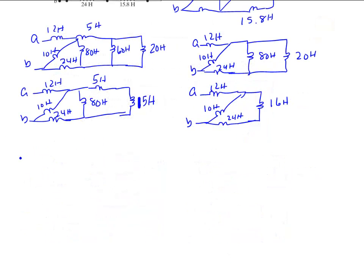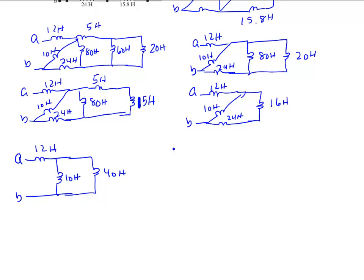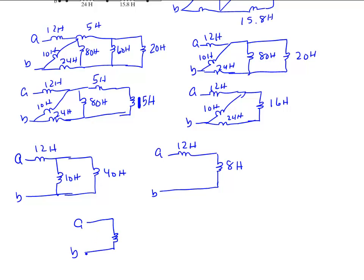16 and 24 in series yields 40 Henry. Now we have 12 Henry, 10 Henry vertical, and 40 Henry. Putting 40 in parallel with 10 yields 8 Henry. The final step: 8 plus 12 yields 20 Henry. So LAB is equal to 20 Henry.